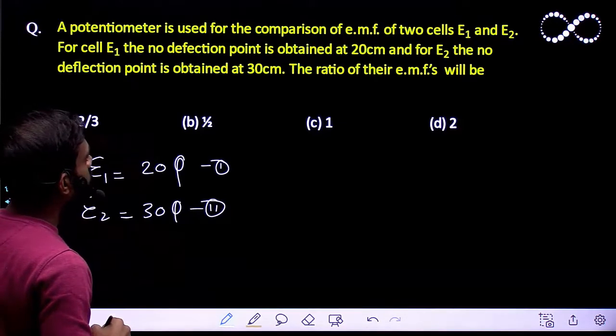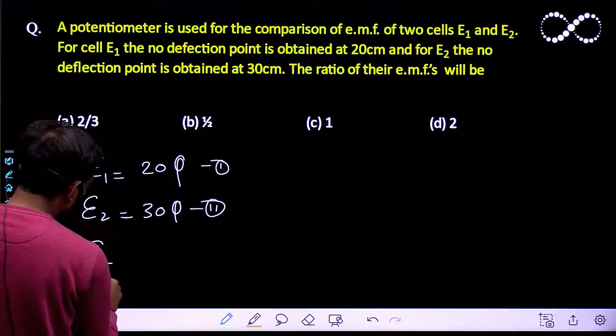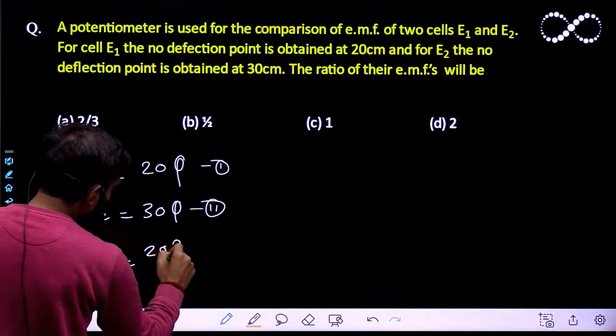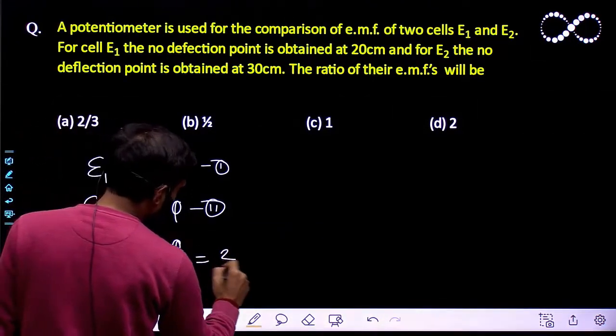Now it is asking for the ratio of the EMF. So all I need to find is E1 upon E2. That is equal to 20 phi upon 30 phi, so that will be equal to 2 upon 3.